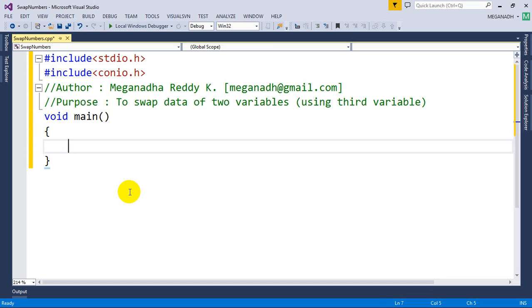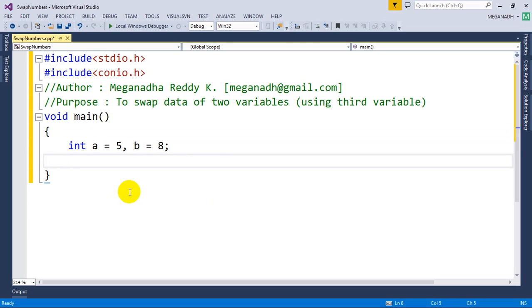So program execution starts in main method. And then we're going to write here int a is equal to 5, b is equal to 8. Now I'm going to print the values, so printf, I'm going to write before swap, I'm going to write slash n.